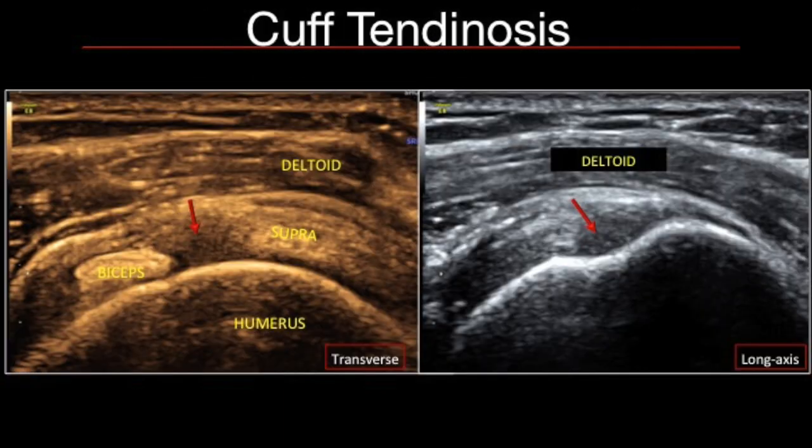In this case, on short axis we see thickened anterior fibers of the supraspinatus tendon with an ill-defined hypoechoic appearance of the anterior edge. On the long axis, the normal fibrillary pattern is lost and there is some cortical irregularity over the greater tuberosity. However, there is no obvious tear to be seen.